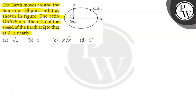First, try to understand the motion of Earth around the sun and learn about how gravity affects this motion. Try to understand where we can use the conservation laws. Here we are applying the law of conservation of momentum. The Earth is moving around the sun in an elliptical orbit. Given the ratio of distances from the sun to Earth at two positions A and B, OA by OB is equal to X. So now we need to find the ratio of velocities of Earth at the two points.